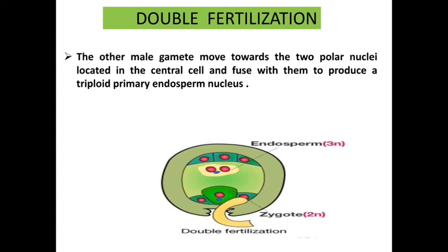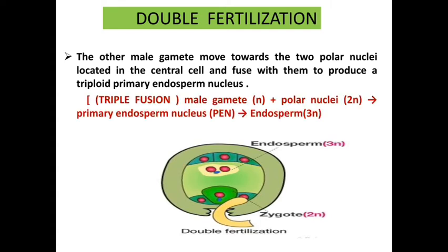One male gamete fuses with the egg cell to form a diploid zygote, while the other male gamete fuses with the two polar nuclei to form the primary endosperm nucleus. This second fusion is known as triple fusion, because the male gamete fuses with two polar nuclei, resulting in a primary endosperm nucleus that is triploid — three times in number. Because two fertilizations occur, the process in flowering plants is called double fertilization.